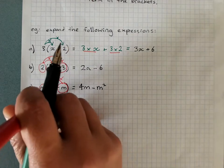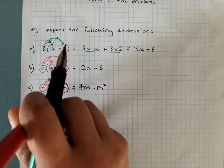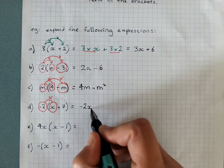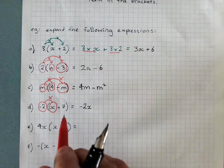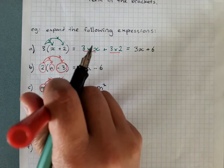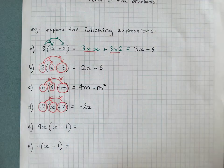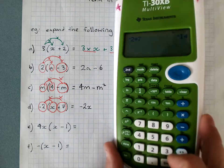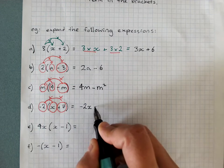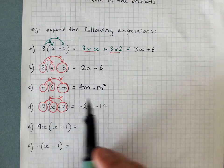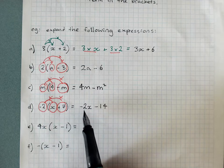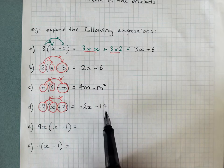Negative 2 outside the brackets. Multiply by the first term: negative 2 times x is negative 2x. Multiply by the second term: negative 2 times positive 7 — use your calculator if you need to. Negative 2 times 7 is negative 14, so we write minus 14. Check: negative 2 times x gives negative 2x, negative 2 times 7 gives negative 14. So the answer is negative 2x minus 14. That's as far as it can go.